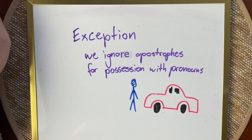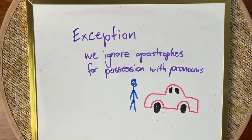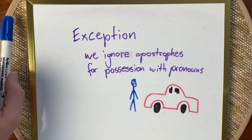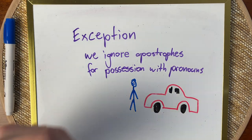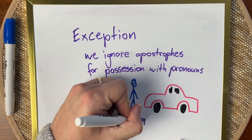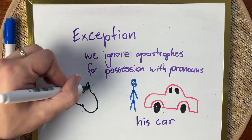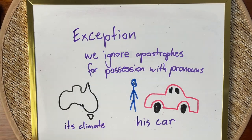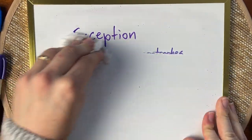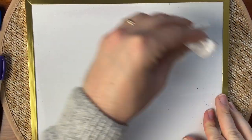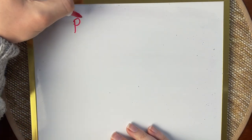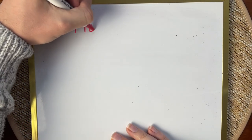Let's take 'Jason's car.' We can swap 'Jason,' the noun, out for another word: 'his.' We're talking about 'his car' — no apostrophe. 'Australia's climate' — we can have 'its climate' — no apostrophe. There are lots of times we don't need apostrophes where people can get confused and just sprinkle them in anyway, but that makes their writing confusing.